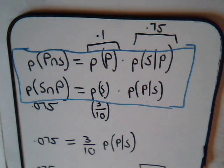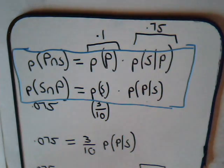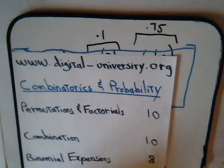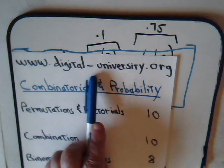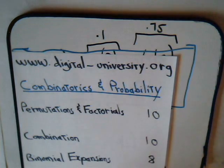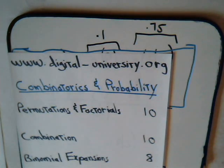That's the end of this video. We referred to other videos regarding conditional probability — videos seven and eight — which you can find at digital-university.org under the combinatorics and probability section. Come back for more videos, and we'll solve some more problems.